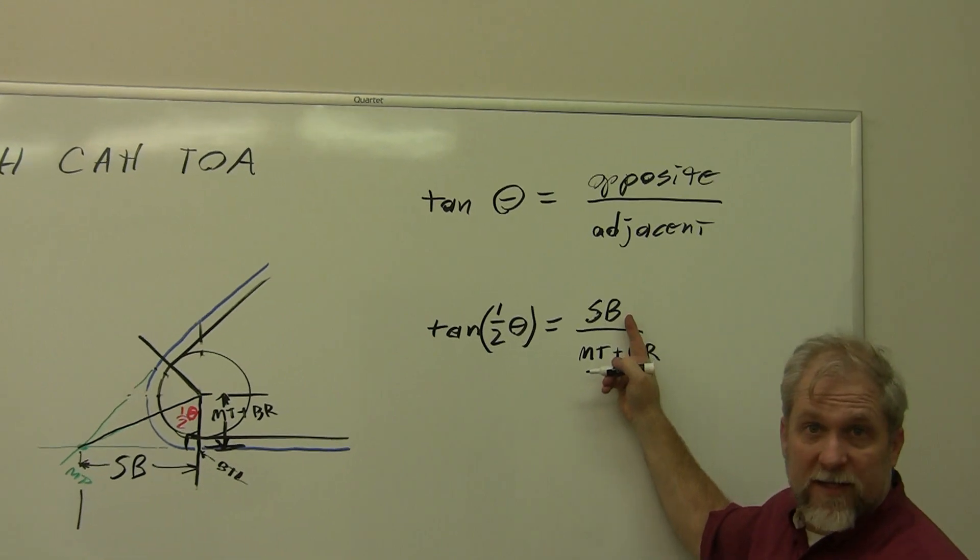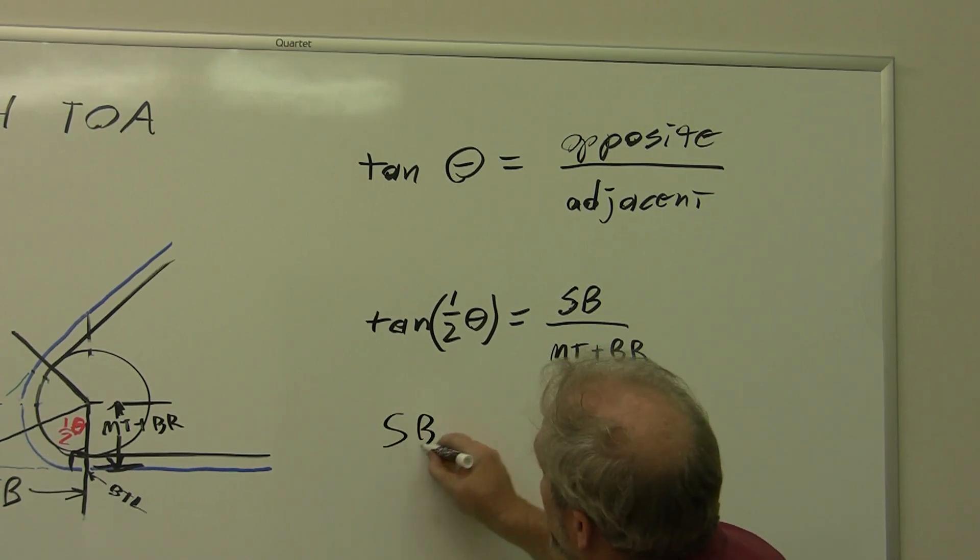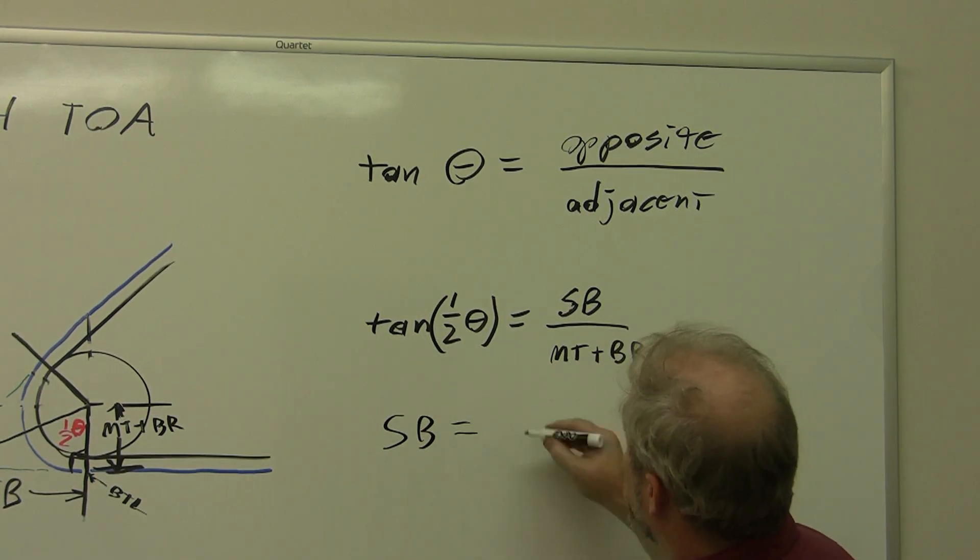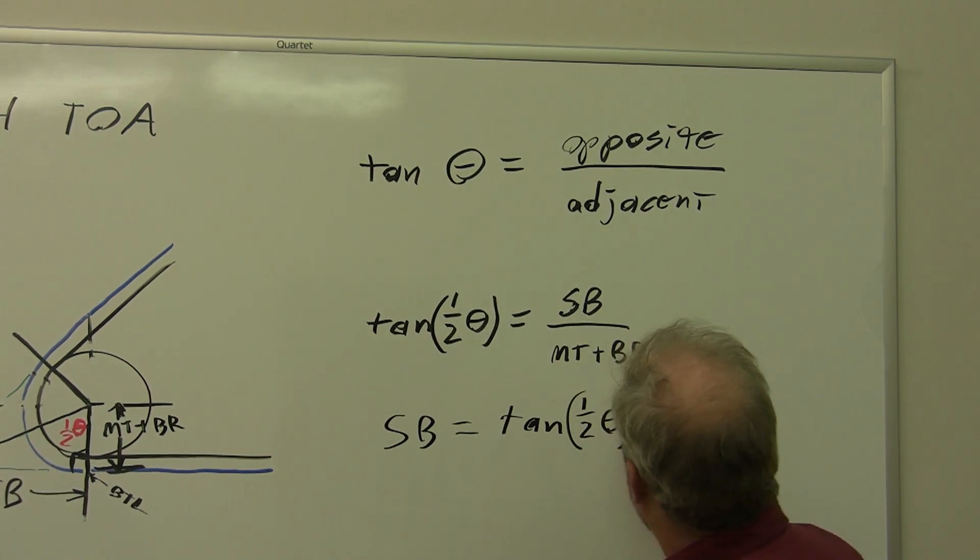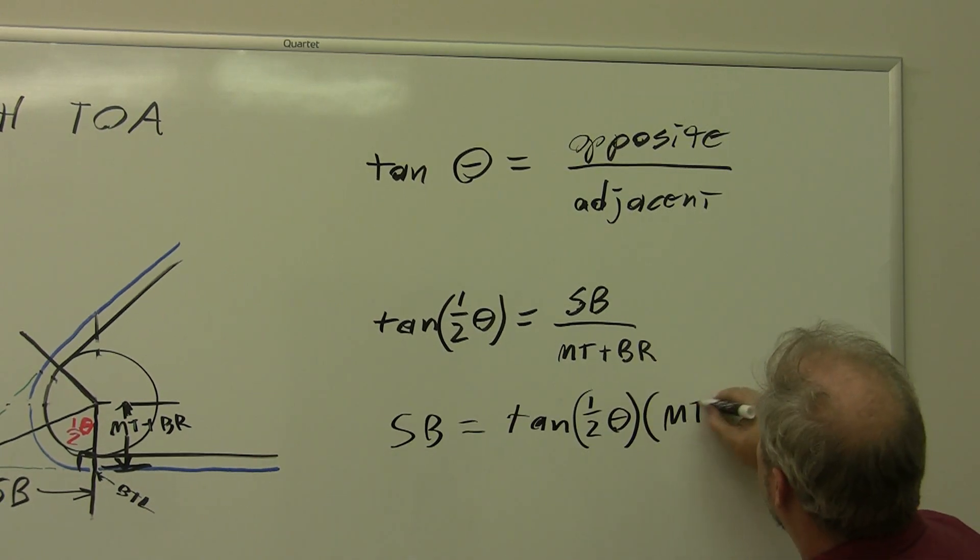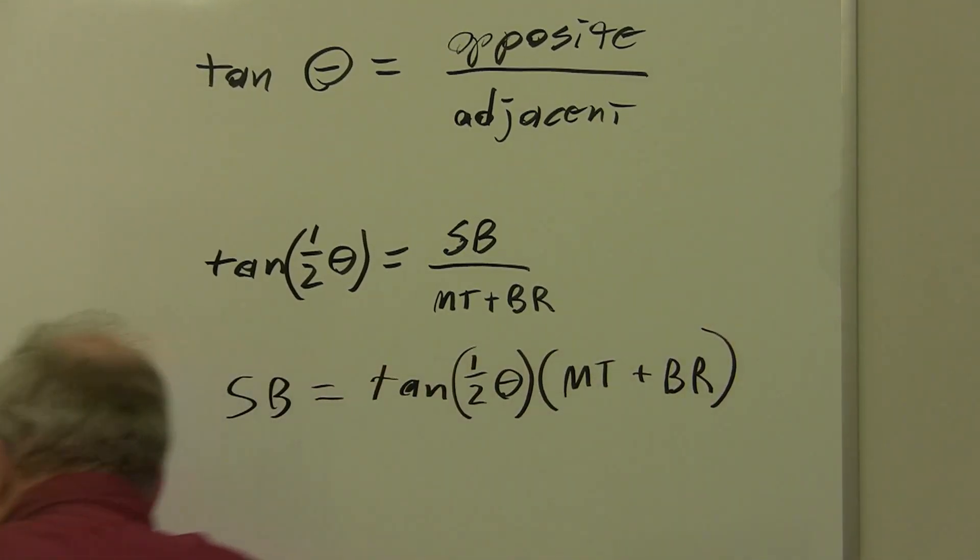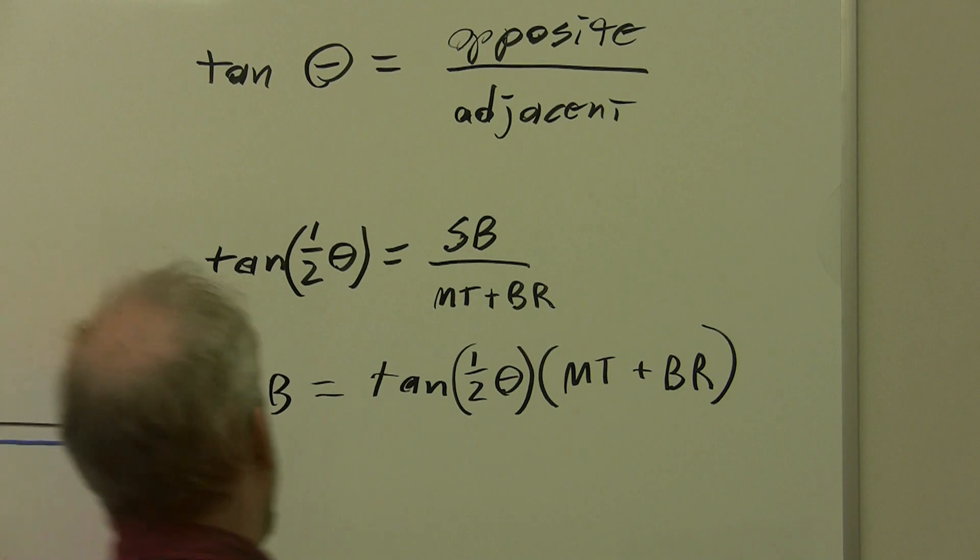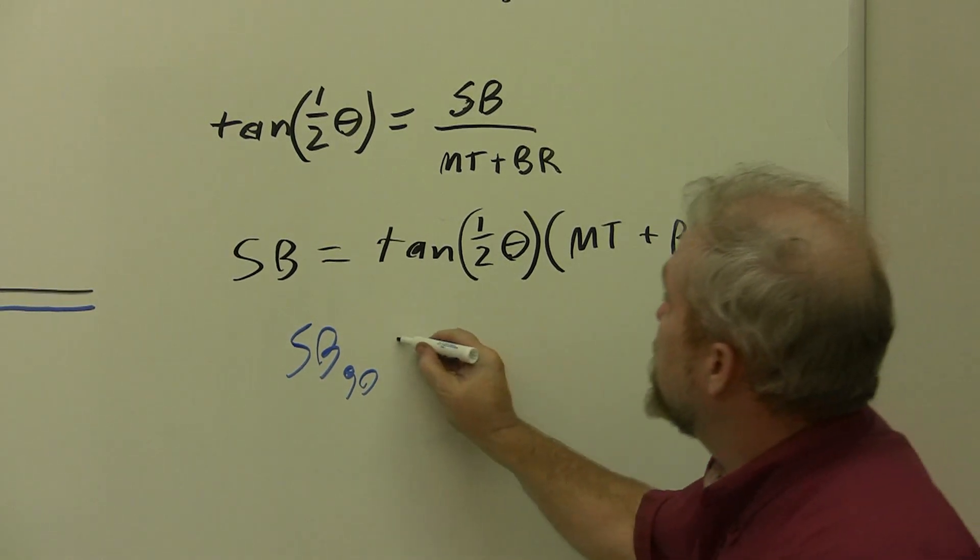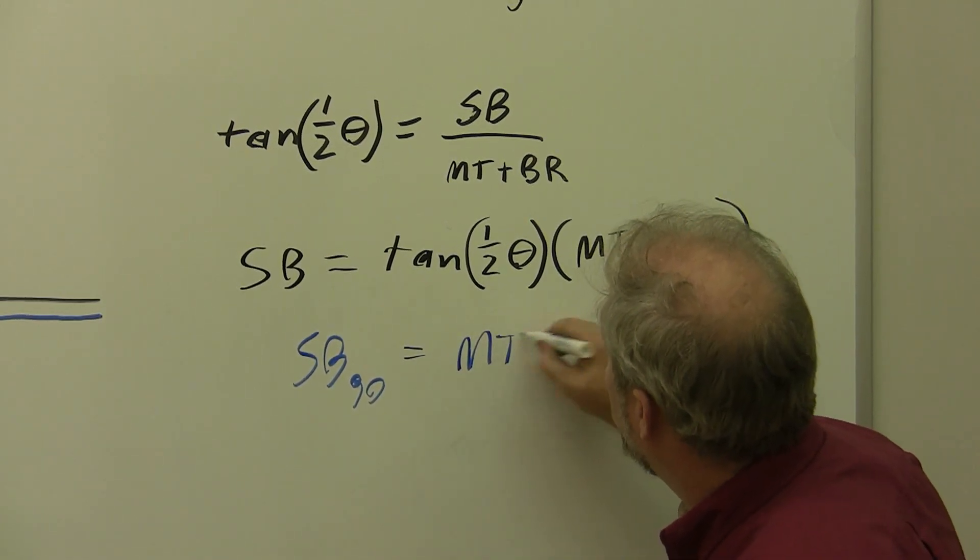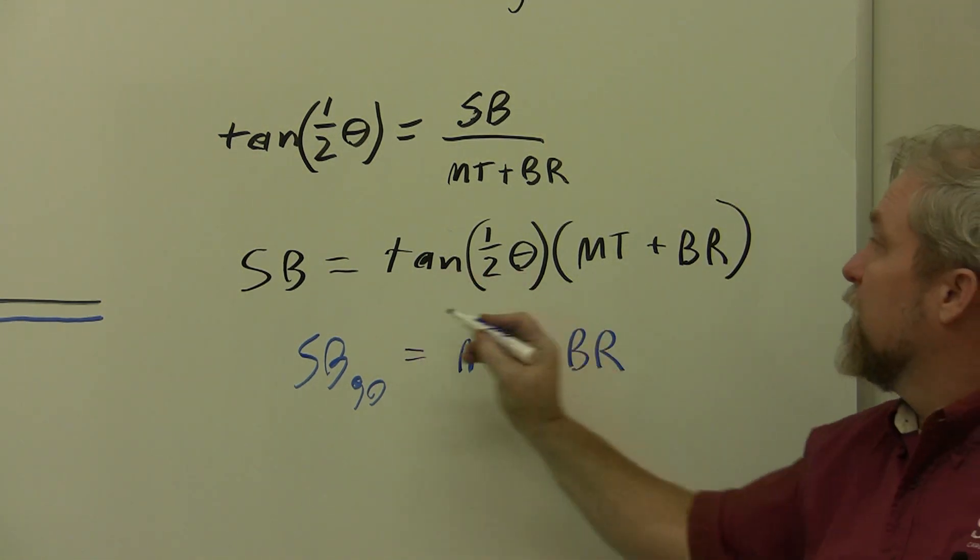I want setback by itself because that's what I'm trying to calculate. Rearranging my equation, I get setback equals tangent of one half of the angle that I've bent the sheet metal to, times the quantity material thickness plus bend radius. You'll recall that for a 90 degree bend, we found that our setback equals just material thickness plus bend radius. We have this tangent of one half theta that sticks in the front.